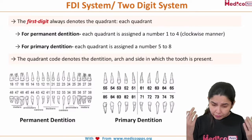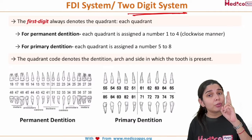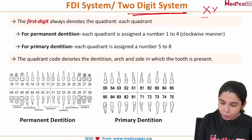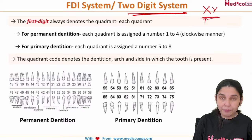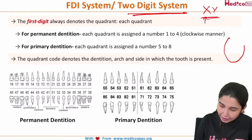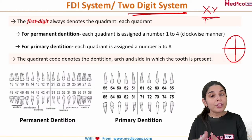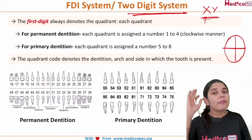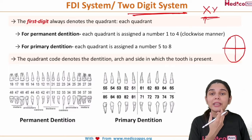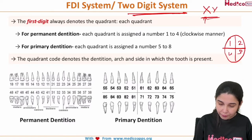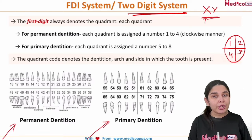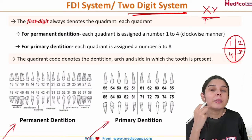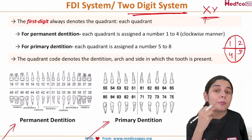In the two-digit system, if X and Y are the two digits, the first digit denotes the quadrant. The quadrants are numbered clockwise, starting from the right side: 1, 2, 3, 4. Quadrant 1 is maxillary right, quadrant 2 is maxillary left, quadrant 3 is mandibular left, and quadrant 4 is mandibular right.